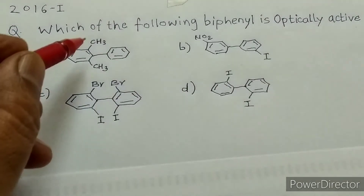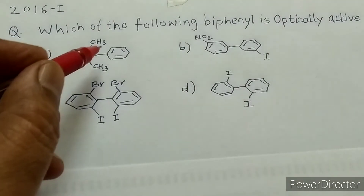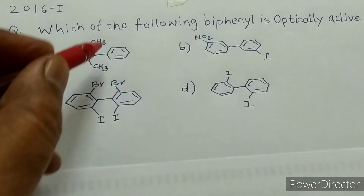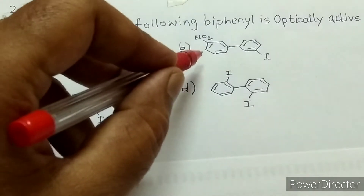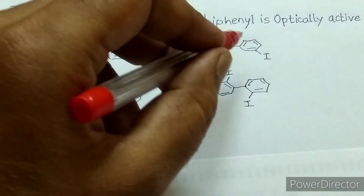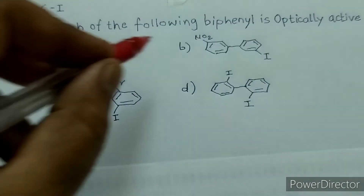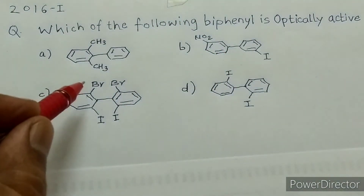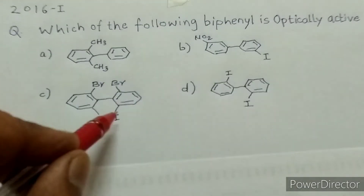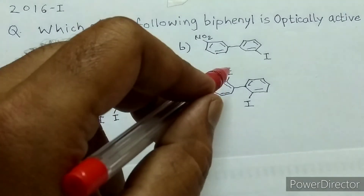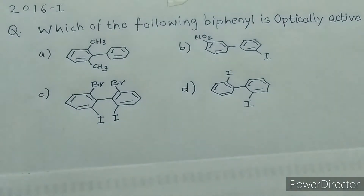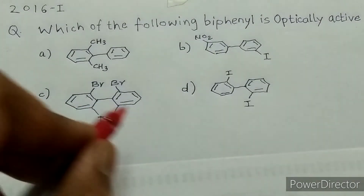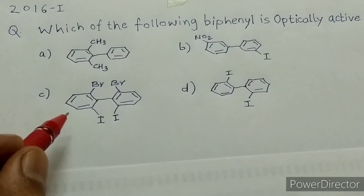In option A, ortho substitution is present only on one ring and there is no ortho substitution on the second ring, so this is out of contention. In option B, the substitution is on the meta position, so this is also out of contention. In option C, ortho substitution is present on both rings. In option D, ortho substitution is also present on both rings. So we now have to decide between option C and D which biphenyl exhibits optical activity.